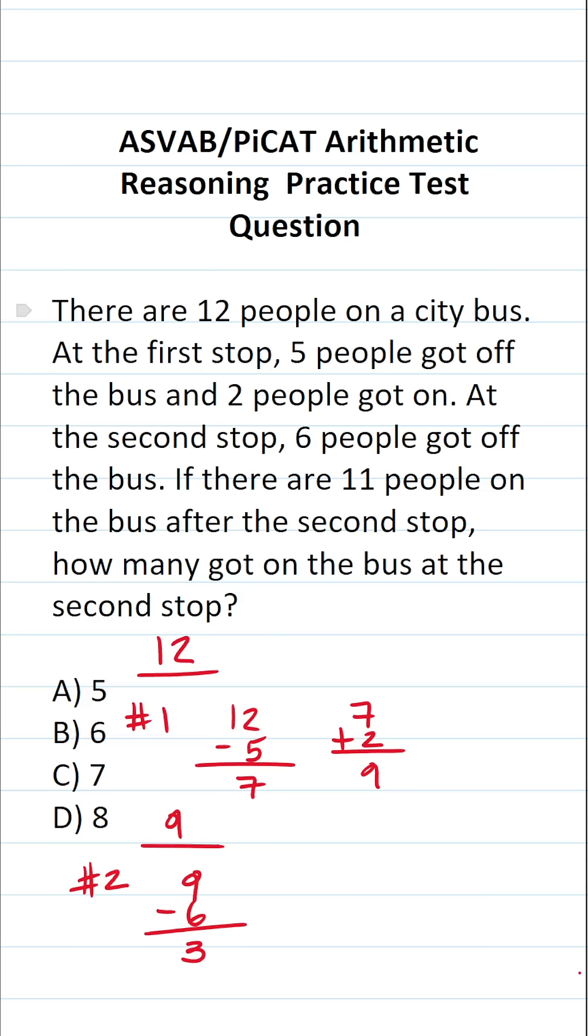But then it says if there are 11 people on the bus after the second stop, how many people got on the bus at the second stop? So we went from having three people on the bus to having 11 people on the bus. To determine how many people got on the bus at the second stop,